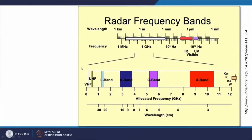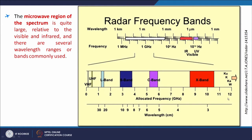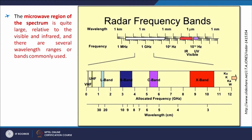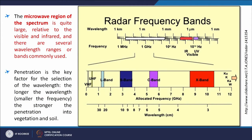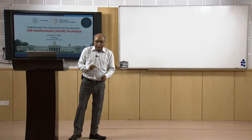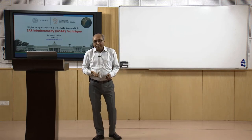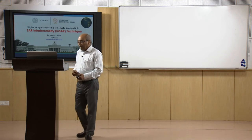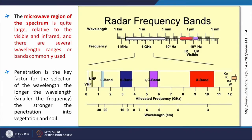There are different frequency bands in the microwave region — X band, C band, S band, L band, and others. The most popular ones are X band and C band. The microwave region of the spectrum is quite large compared to visible or infrared. Penetration is the key factor for wavelength selection. C band is very popular in SAR interferometry, as we will see with several examples.